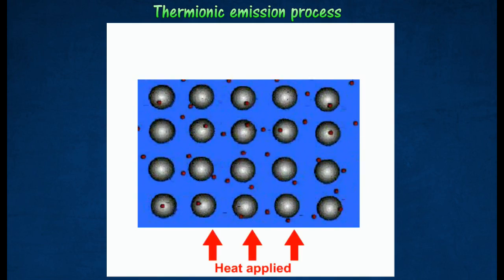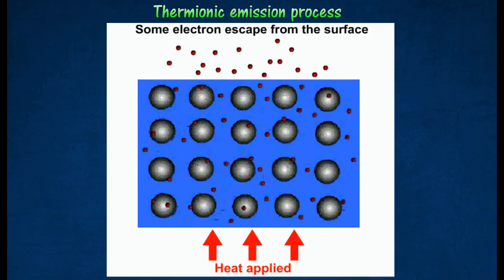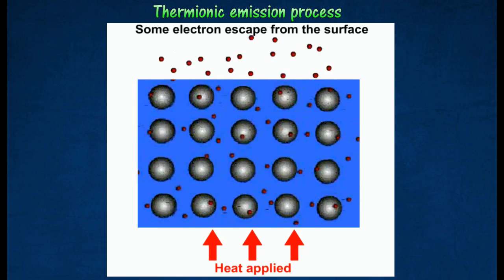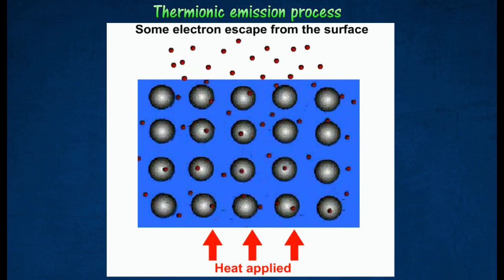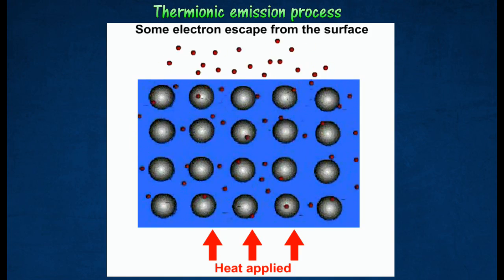When the temperature of a metal is raised, electrons which obtain enough energy will escape from the surface of the metal. Thermionic emission is the release of electrons from a heated metal.